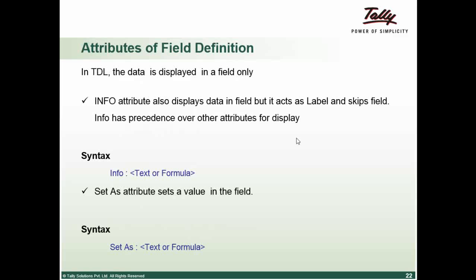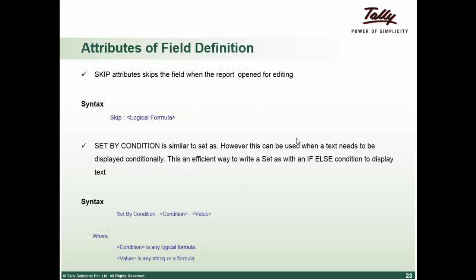So attributes of field definition, we have already seen such as info. Info also displays the data but the difference is it acts as a label. So when the report is in edit mode, the field is skipped. Whereas when it is written as set as, it provides an initial value to the field but allows the user to modify the value. So what in case a user has written info and set as both in his field? In that case, info will get a precedence over your set as.